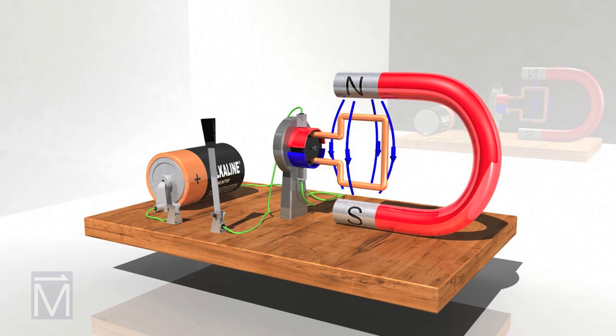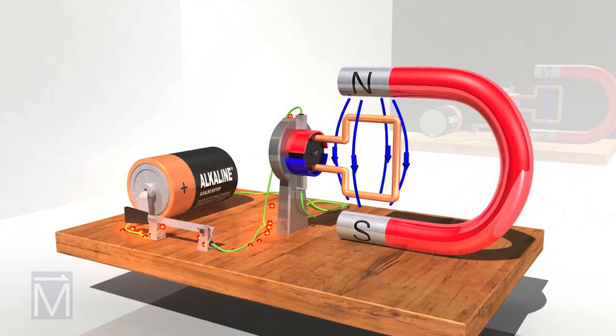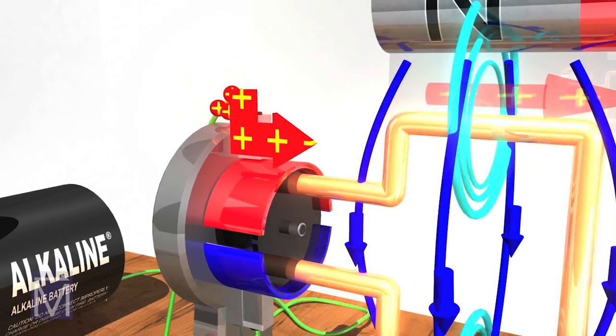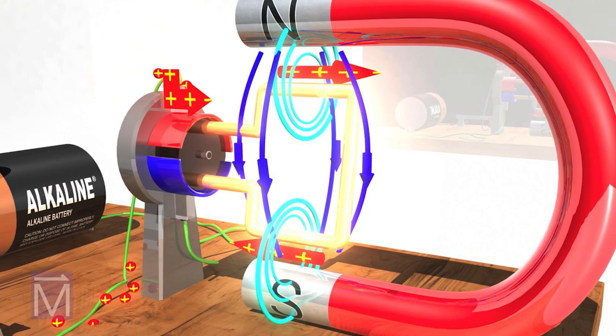Let's power the circuit again and watch, in slow motion, what happens between the poles of that magnet. As soon as that current, represented by the red arrows, starts running through the armature, a magnetic field forms around it.